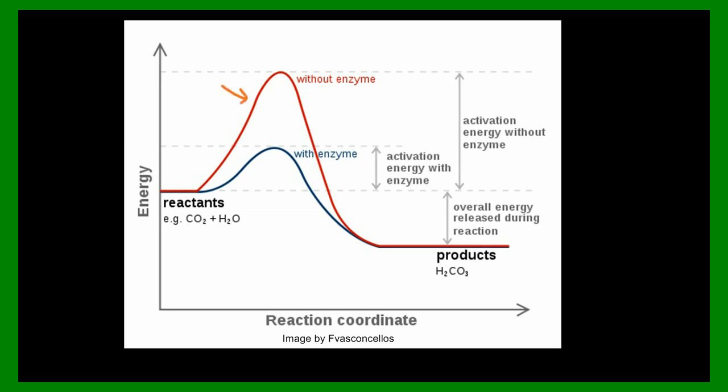The red line is a reaction from carbon dioxide and water to form hydrogen carbonate. It needs a certain amount of activation energy when there's no enzyme present. When the enzyme is present, it needs a different amount of activation energy. Which amount is lower?